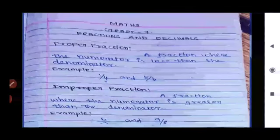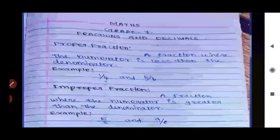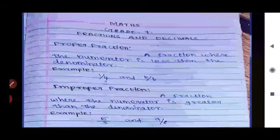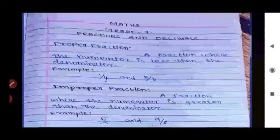Proper fraction: A fraction where the numerator is less than the denominator is called a proper fraction. For example, 1/4 and 5/6. The numerator is less than the denominator, so these are called proper fractions.